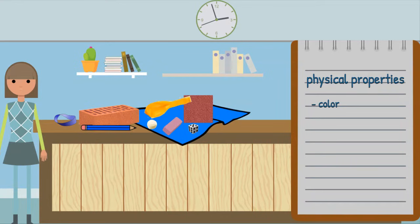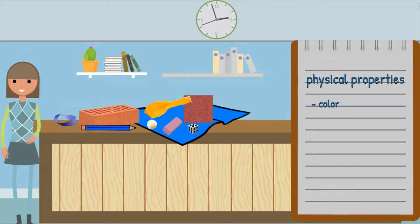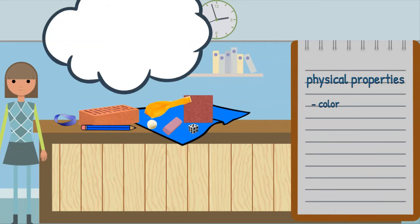Do you see any other colors? I do too! I see white, yellow, pink, and brown. Let's sort out the blue objects. The rubber band, pencil, and towel are all blue.